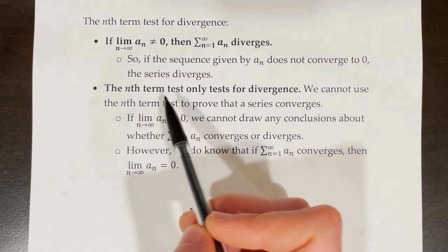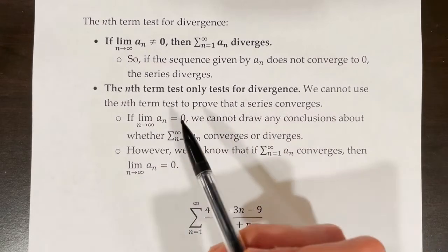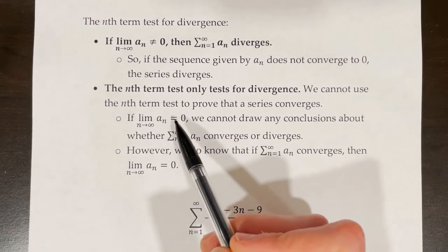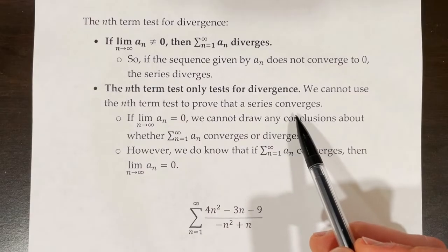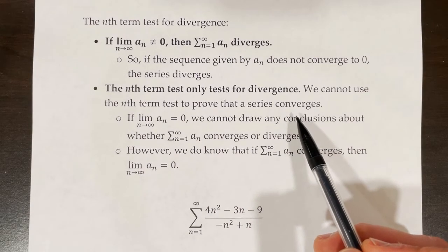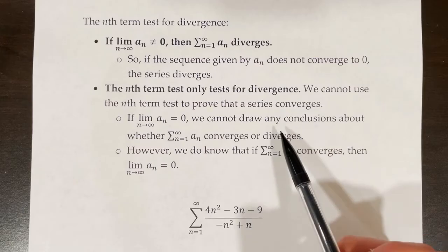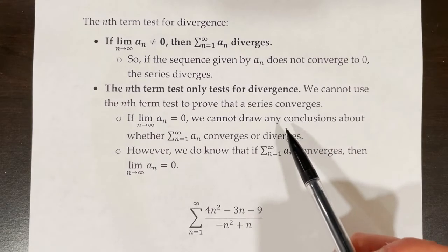The nth term test only tests for divergence. We cannot use the nth term test to prove that a series converges. You would never say something like "this series converges by the nth term test." You would be able to say that a series diverges by the nth term test.